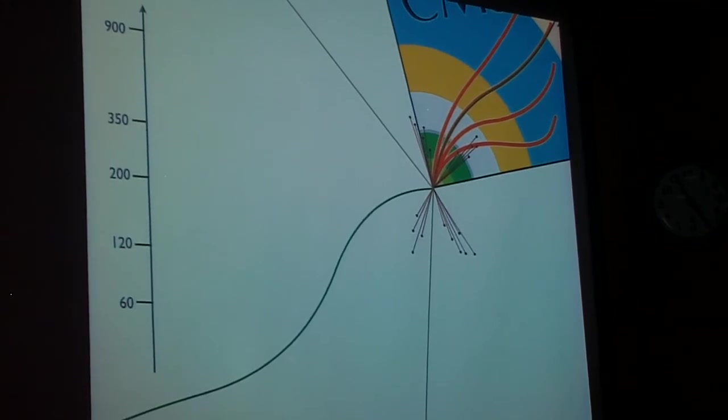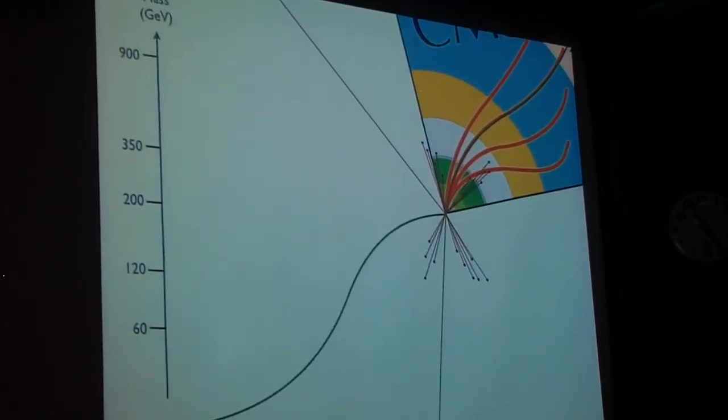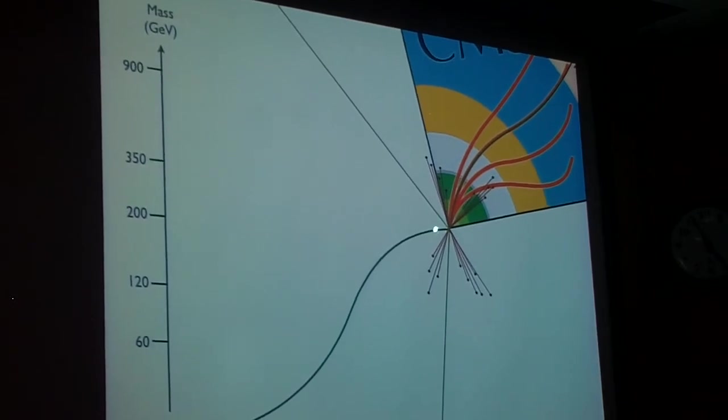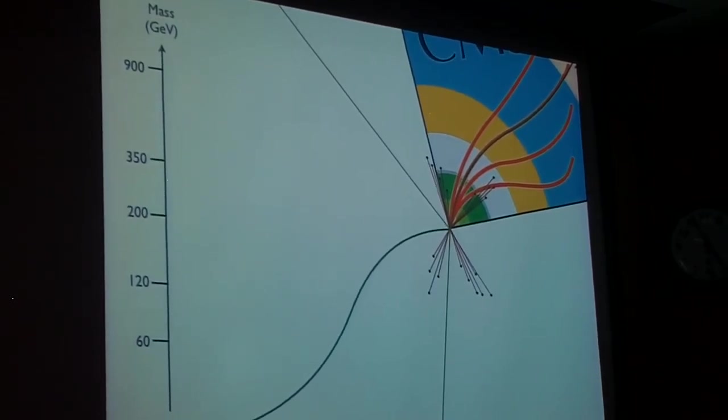CMS has magnetic fields, ingoing in this region, outgoing in the other region. What you're seeing must be some charged particle transversing through your detector.